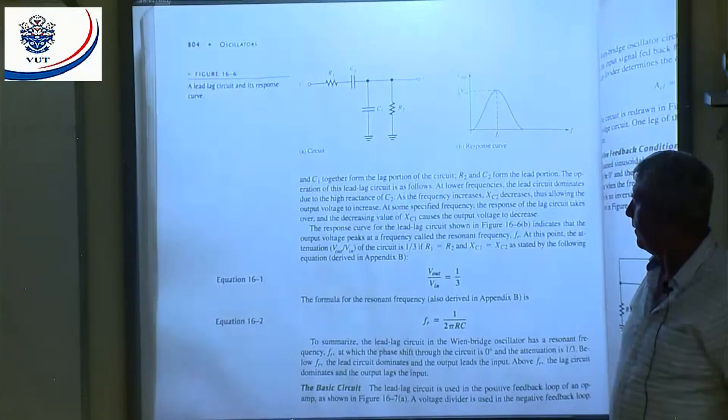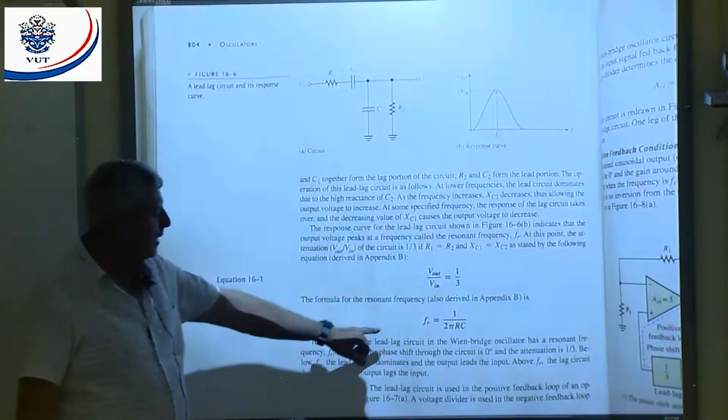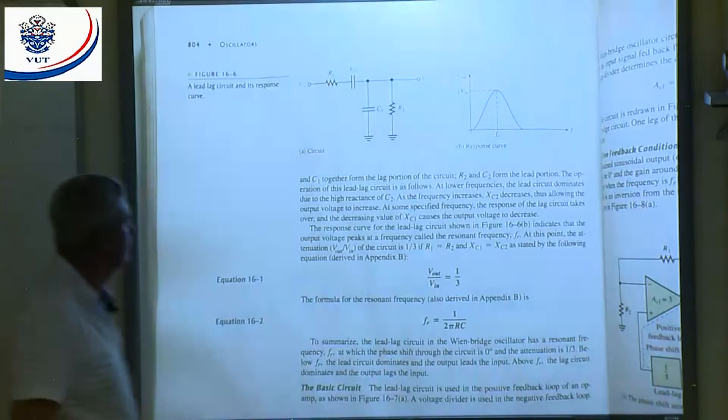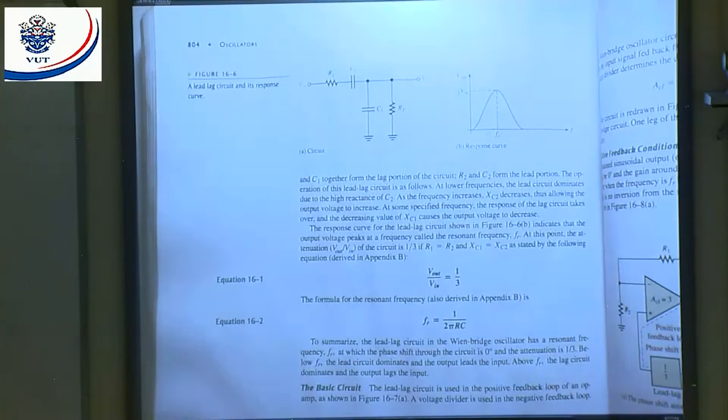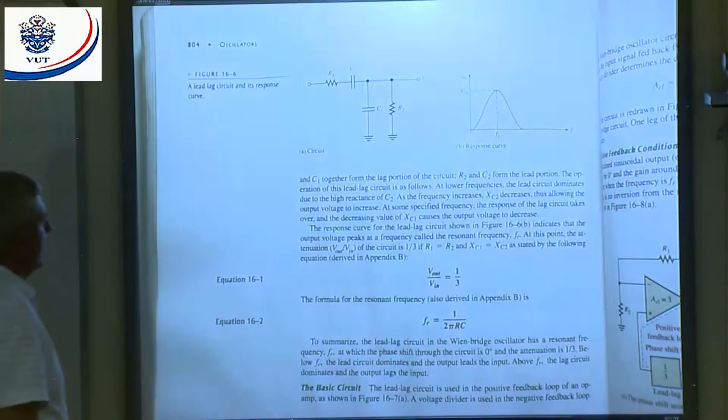Equation 16.1: Vout over Vin equals one-third. The formula for my resonant frequency is 1 over 2πRC. That is my resonant frequency of the lead-lag circuit. That means my attenuation is going to be one-third. So what will the gain of the amplifier be to get a closed-loop gain of one? It should be three — a gain of three times one-third gives a closed-loop gain equal to one.